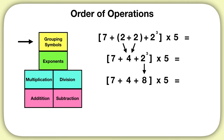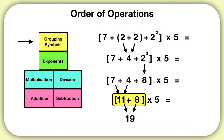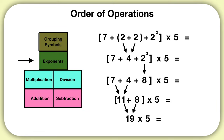Now solve the rest of this equation on your own. What is the solution to this equation? Inside of our brackets, we see two addition operations. We will work left to right. 7 plus 4 is 11. Then we can solve 11 plus 8 is 19. Now that we're finished with our grouping symbols and we don't have any exponents, we can multiply. 19 times 5 gives us our final answer of 95.